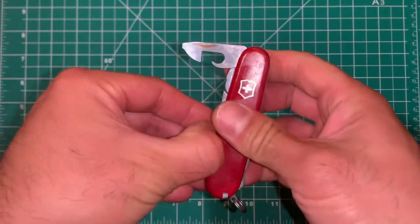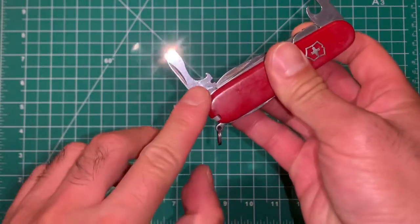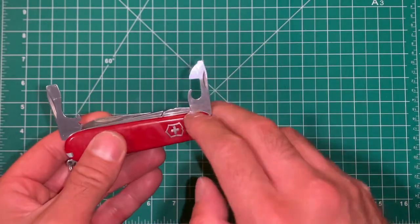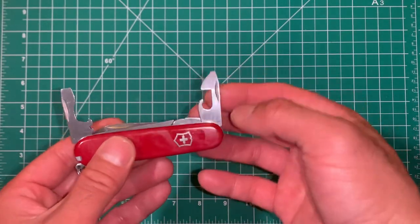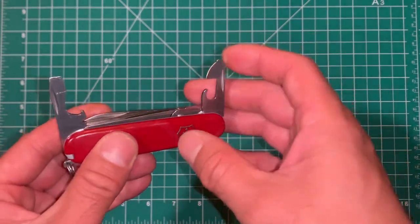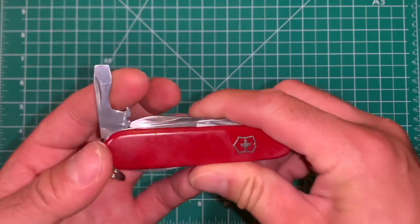For those not familiar with Victorinox, you've got your standard opener layers here. We've got the can opener with the small flathead Phillips on top.